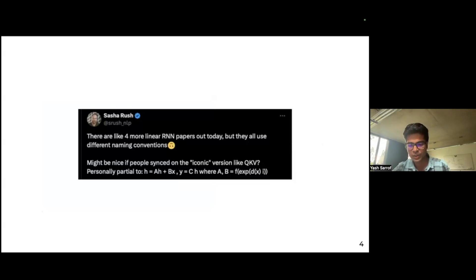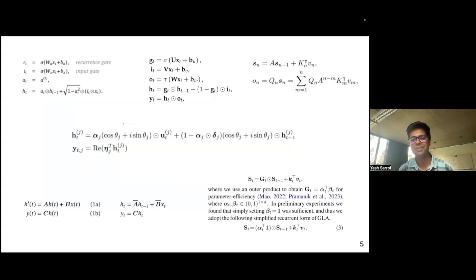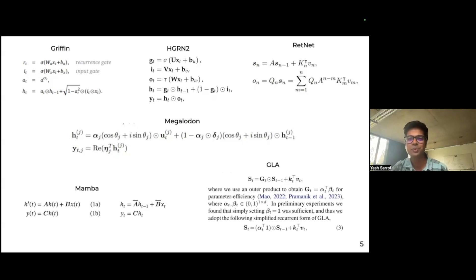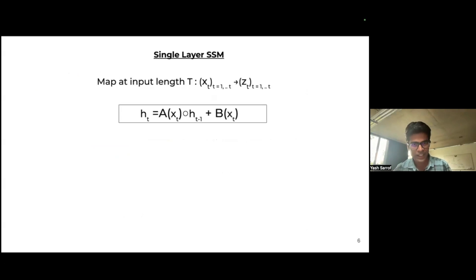One major problem with SSMs — also called linear RNNs because there's no non-linearity while updating — is that everyone has their own way of naming things. There are six different papers, all with their own notation for describing the same SSM recurrence. Because of that, we're redefining the equation in our own way. A single SSM layer is simply a map at input length t, maintaining the shape of the input so the output is the same shape as the input.